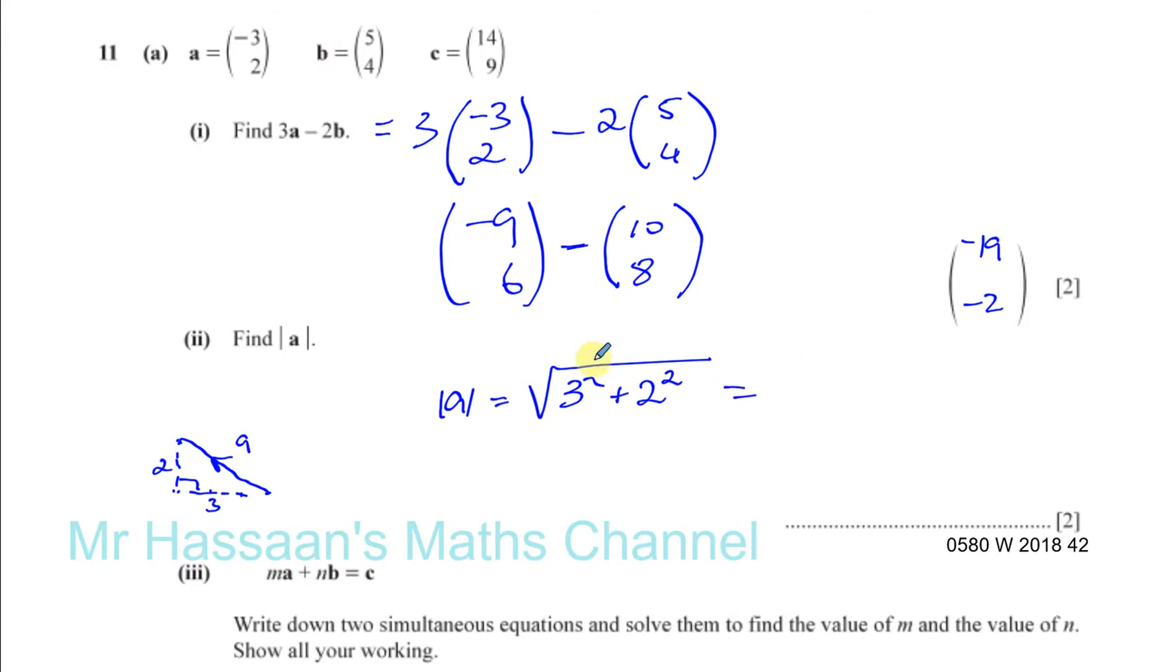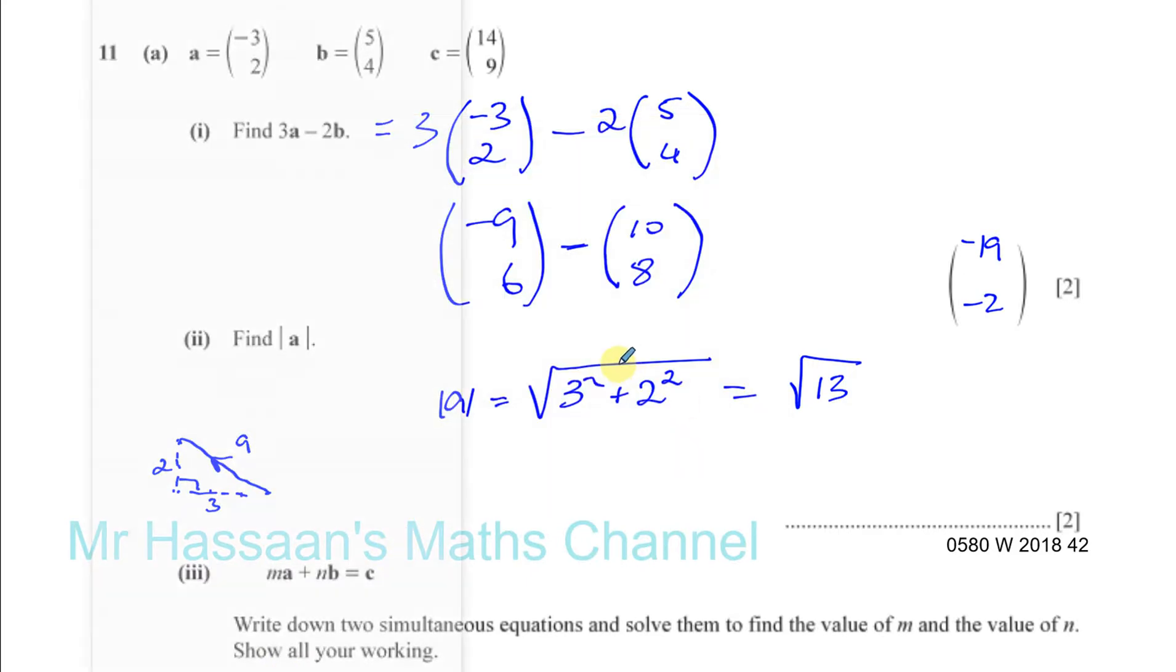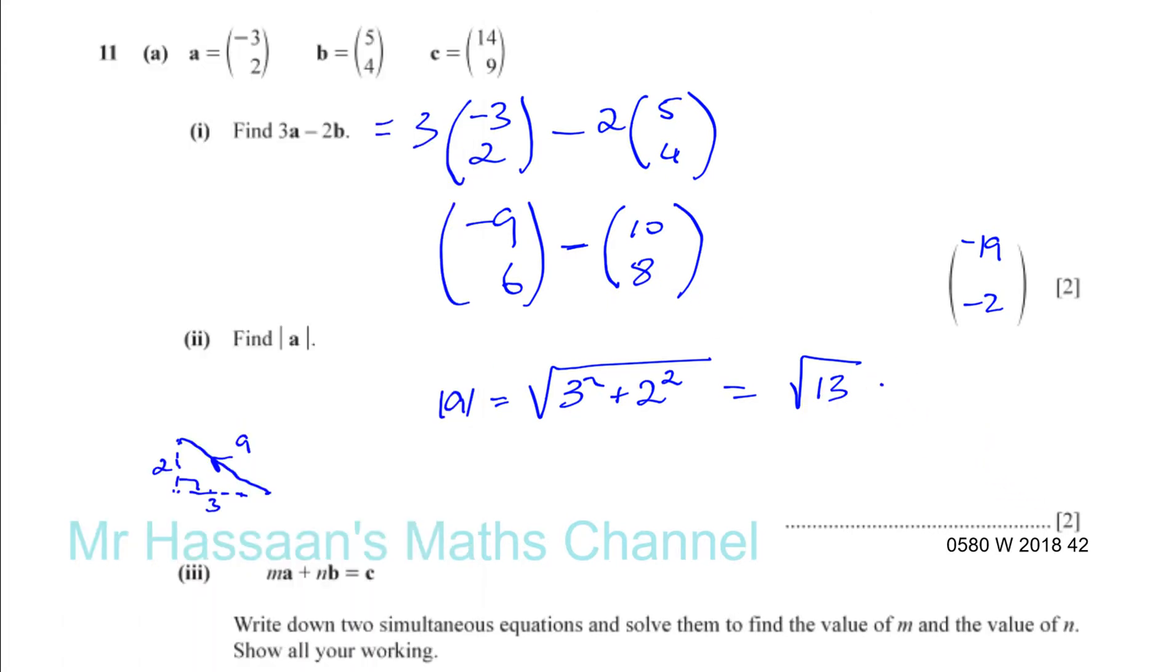You're going to have the square root of 9 plus 4, which is 13. And the square root of 13, you're going to work it out. So we have the square root of 13 is equal to 3.6055. Of course, we've got to round it to 3 significant figures, which is 3.61.